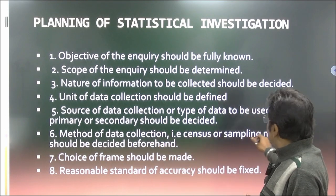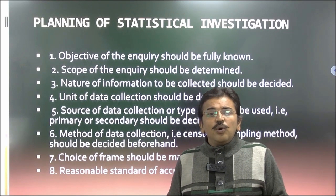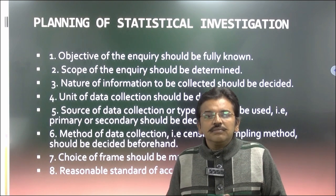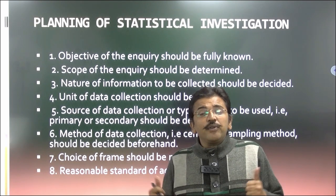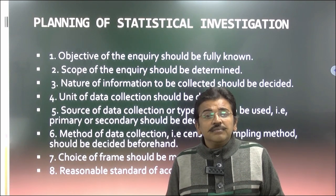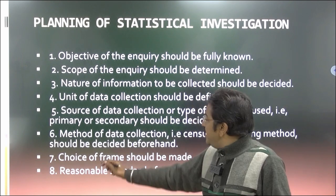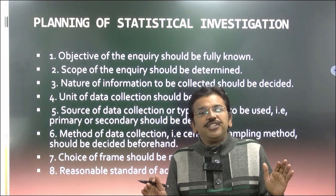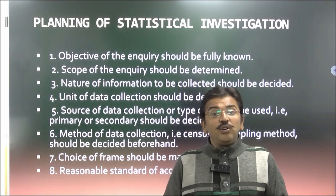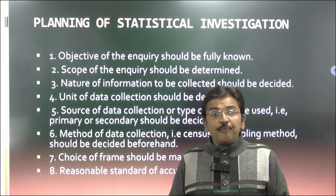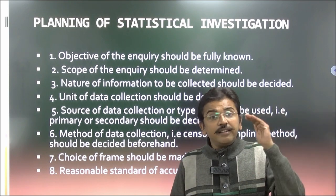Methods of data collection should be defined — whether it is census or sampling method. Collecting data from each and every individual in a specific area is the census process, while selecting some people and taking data is the sampling method. Then the choice of frame should be made — which statistical tool to apply, whether it is a comparative, analytical, descriptive, empirical, historical, philosophical, conclusive, or exploratory study. Finally, reasonable standards of accuracy should be fixed — in scientific study up to 99% accuracy, and for social science 95% must be confirmed.